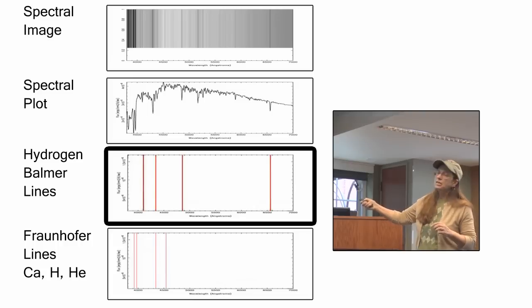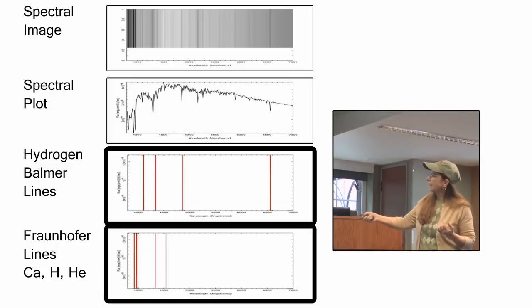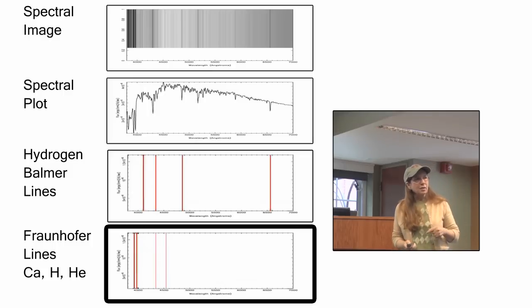However, if you overlay that with a double calcium line, you will see that the two lines perfectly line up with these two absorption lines. That tells you that it is a sun-like star, because that strong calcium ionized double line is the indicator for a G-type star.